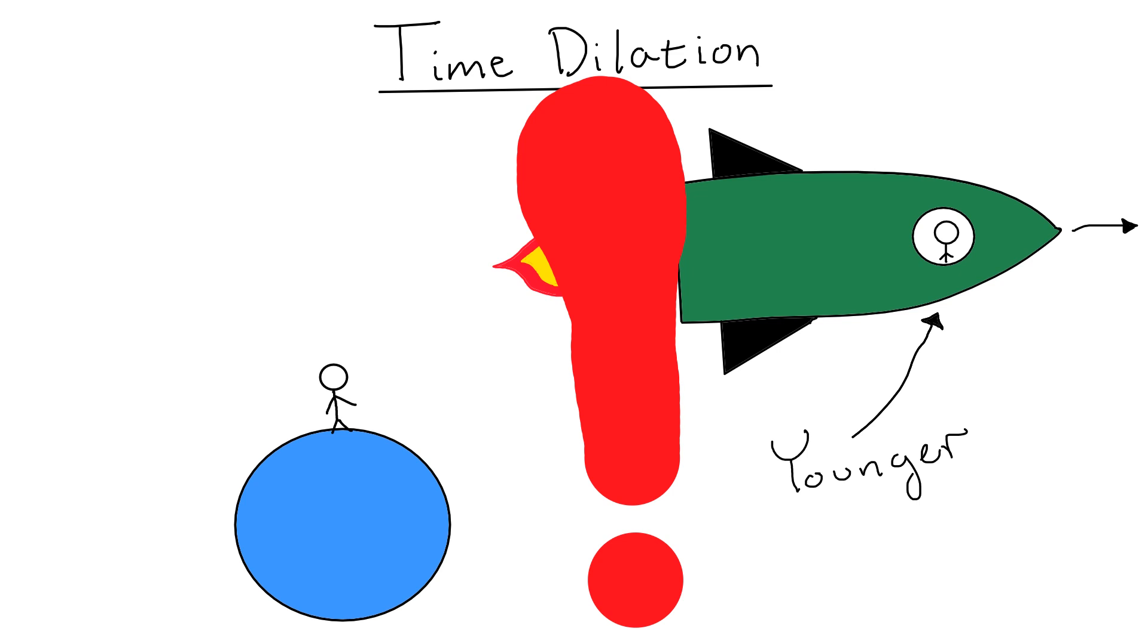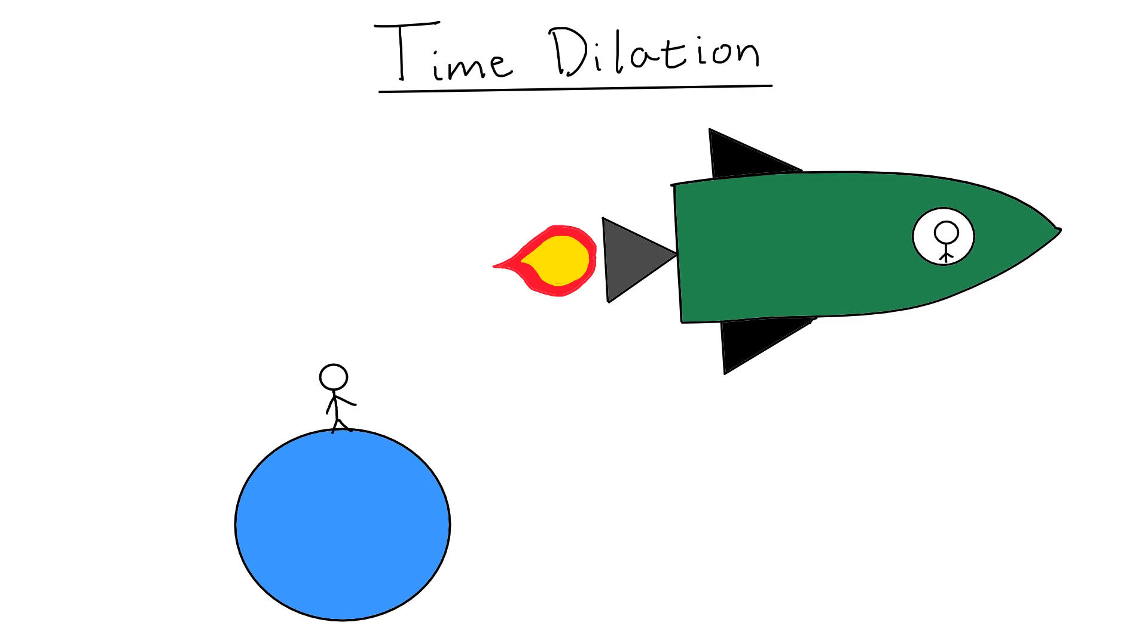But hold on, if the moving observer is traveling at a constant velocity, then they don't actually feel like they're moving at all. What's more is that they will actually see the stationary observer moving in the opposite direction at the same speed.